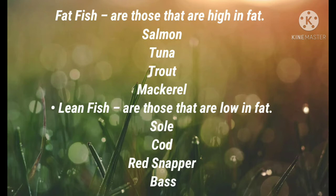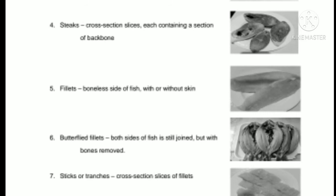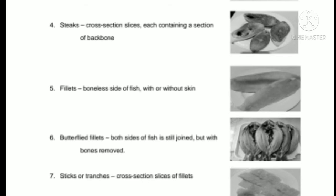For the market forms of fish: whole — completely intact as caught; drawn — viscera removed; dressed — viscera and scales removed, head and tail also removed. Steaks are cross-section slices each containing a section of the backbone. Fillets are boneless sides of fish with skin on or off. Butterfly fillets are both sides of the fish joined at the back. Sections are cross-section cuts of larger fillets.